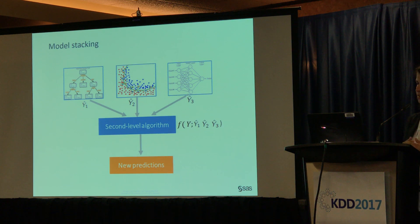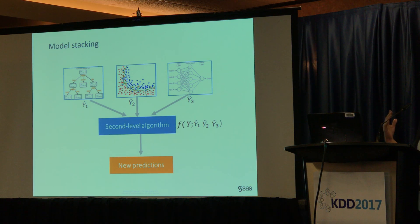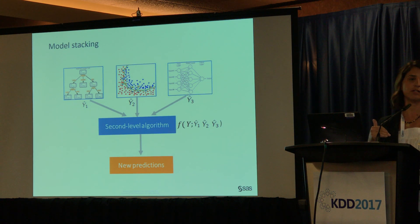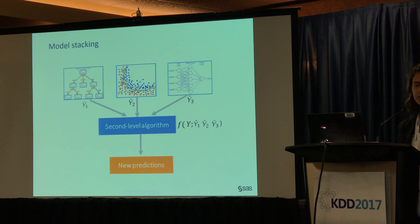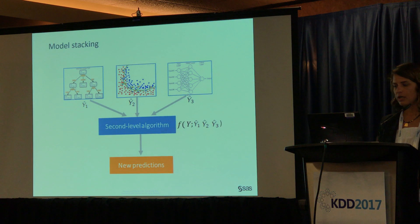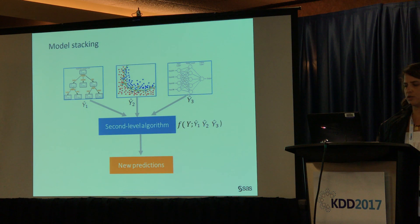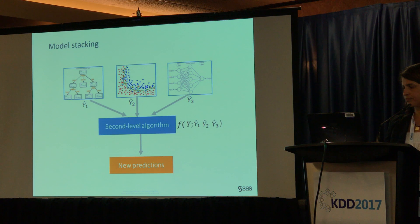Going back to model stacking: you have predictions coming from multiple models, and these are used as inputs to a second-level modeling algorithm. This second-level algorithm is optimally trained to minimize the loss function and produce a new set of predictions. Commonly, linear or logistic regression models are used as the second-level algorithm, but it is not restricted to regression — you can use any machine learning algorithm, opening the door to nonlinear ML algorithms.